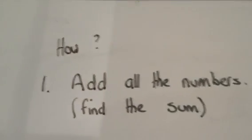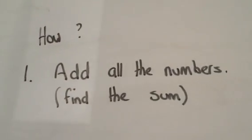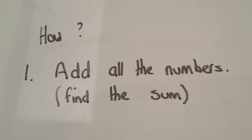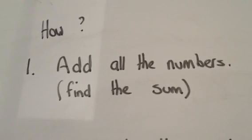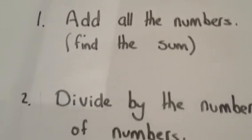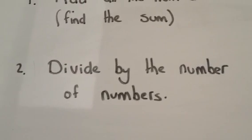Next question is, how do you find the mean or the average? Well, all you need to do is add up all the numbers of the set of numbers that you have. And in math terms, this is called finding the sum. And then you just divide by the number of numbers.